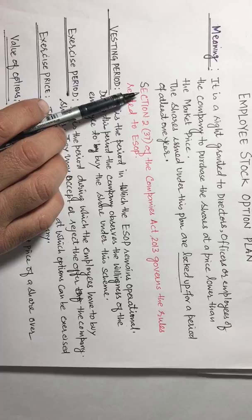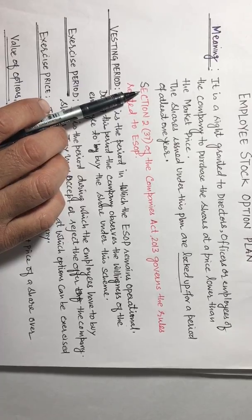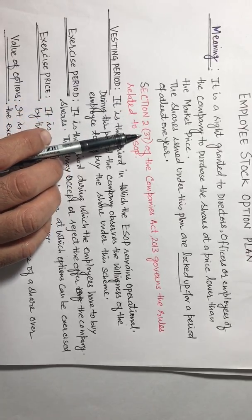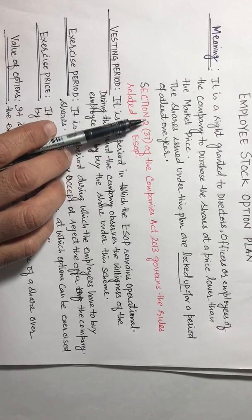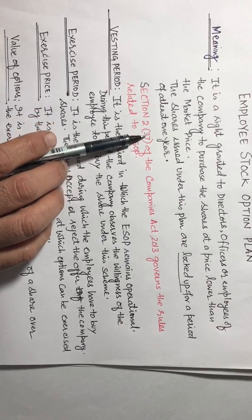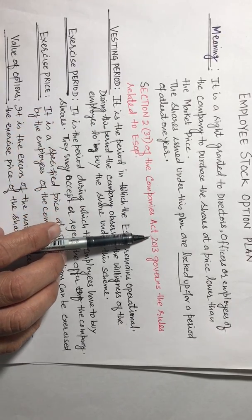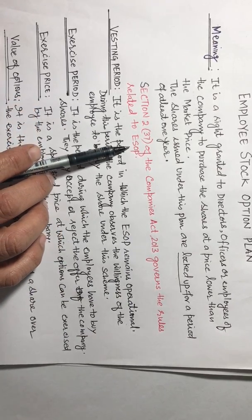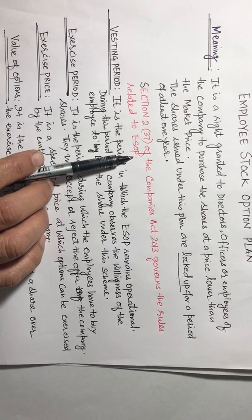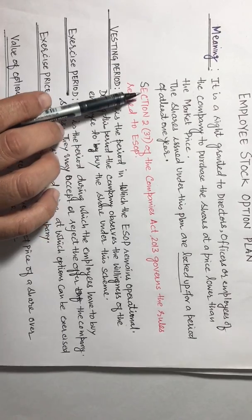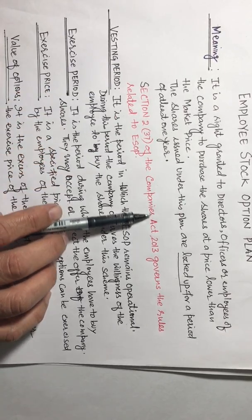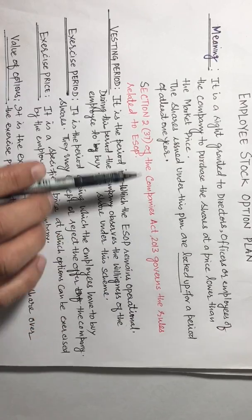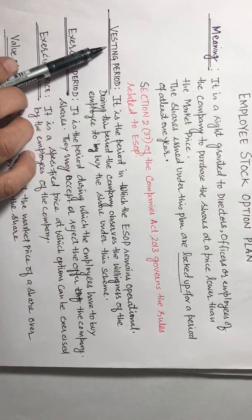Now, as I have mentioned it clearly, section 2, subsection 37 of the Companies Act 2013 governs the rules related to ESOP, that is Employee Stock Option Plan. So we have to remember the section number of Indian Company Act where all the rules are mentioned related to this.